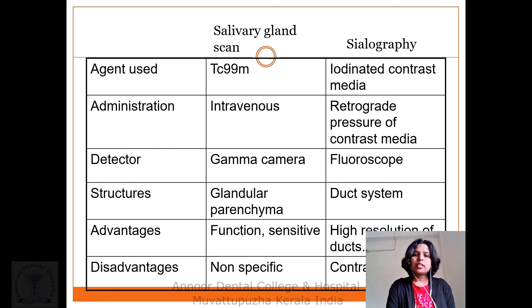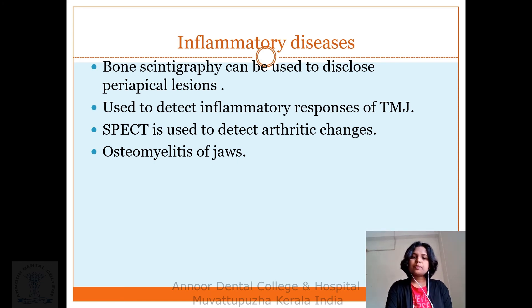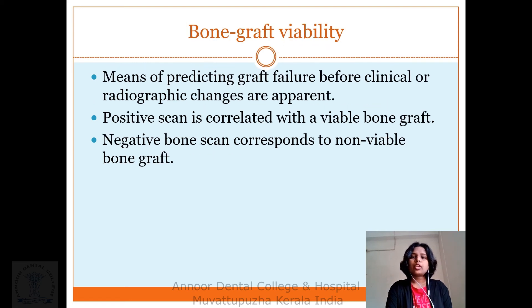This shows the difference between parotid gland scintigraphy and sialography. In inflammatory disease, bone scintigraphy can be used to assess periapical lesions and detect inflammatory responses of the TMJ. SPECT is used to detect arthritic changes. For bone graft viability, scintigraphy is a means of predicting graft failure before clinical changes are apparent. A positive scan is correlated with a viable bone graft, and a negative bone scan corresponds to a non-viable bone graft.